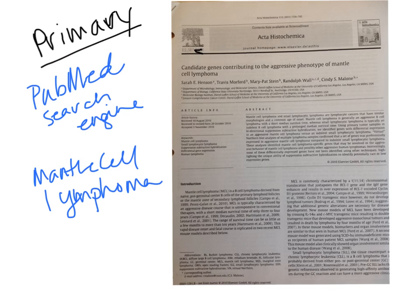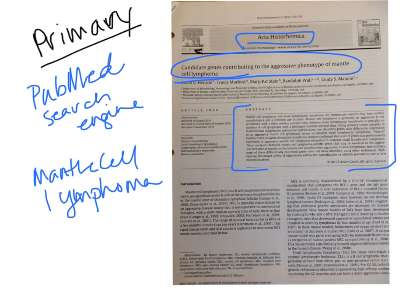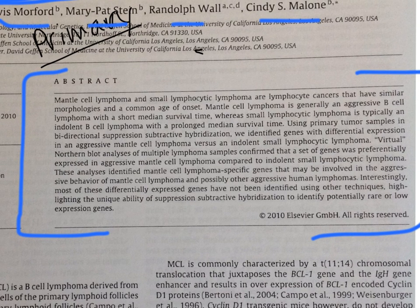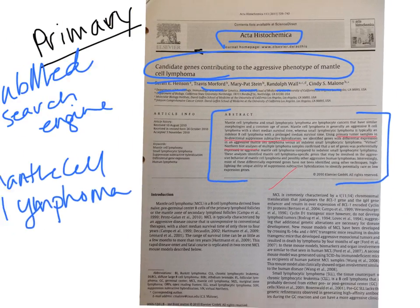How do you know that it's primary research? When you look at the abstract and what they actually did, it's clear that they've done their own experiments. It usually has the journal name, the title of the study, and the list of authors that contributed to the work. If we looked at the materials and methods, it talks about specific experiments that were performed — like bi-directional suppressive-subtractive hybridization using primary tumor samples, northern blot analysis — specific experiments done to find out new data.